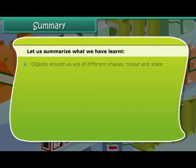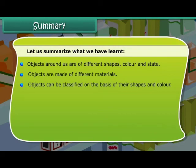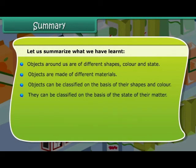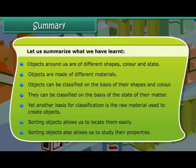Summary: Objects around us are of different shapes, colors, and states. Objects are made of different materials. Objects can be classified on the basis of their shapes and color, on the basis of the state of their matter, and on the basis of the raw material used to create them. Sorting objects allows us to locate them easily, and also allows us to study their properties.